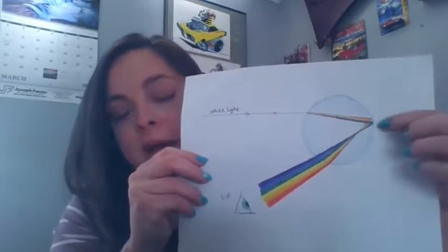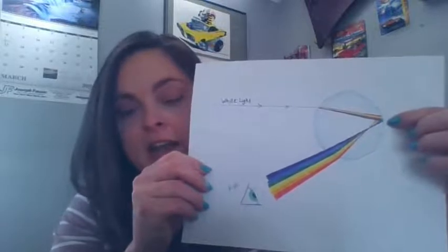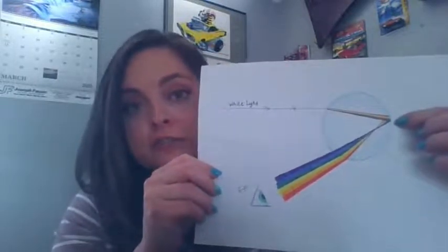When the light hits the back of the droplet, it is reflected off the back side, also called total internal reflection.